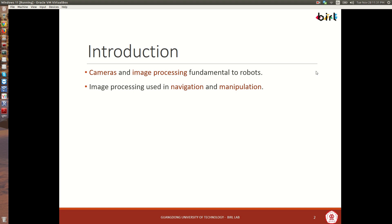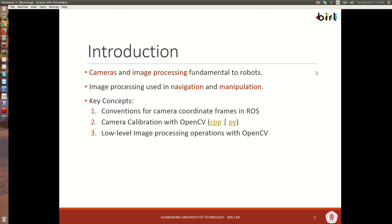Since we're interested in knowing what's happening with the world, we need to process some of that image information in order to navigate or manipulate. In this lecture, you're going to learn basic conventions for camera coordinate frames in ROS, and then how to do intrinsic calibration with one and two cameras through OpenCV, and finally, some low-level image processing operations with OpenCV.